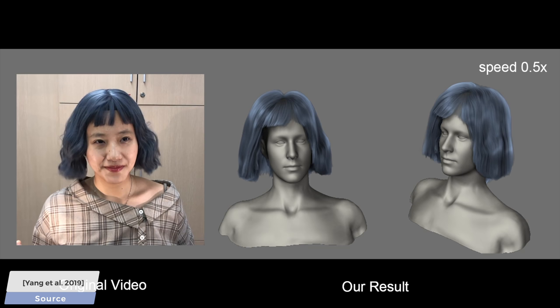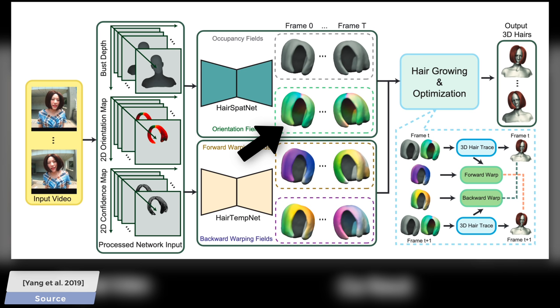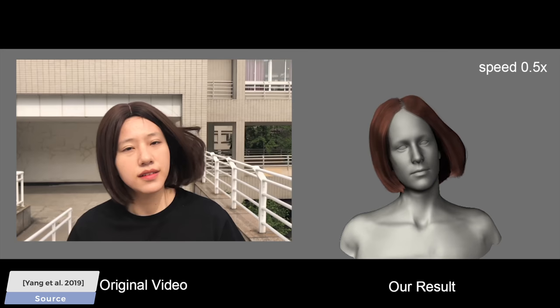The heart of the architecture behind this technique is this pair of neural networks, where the one above creates the predicted hair geometry for each frame, while the other tries to look backwards in the data and predict the appropriate motions that should be present. Interestingly, it only needs two consecutive frames to make these predictions, and adding more information does not seem to improve its results — that is very little data. Quite remarkable.